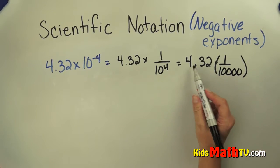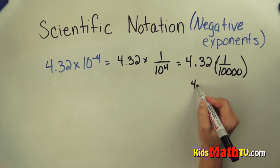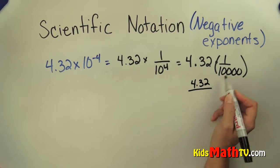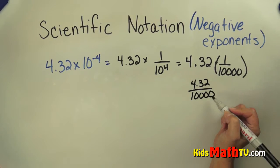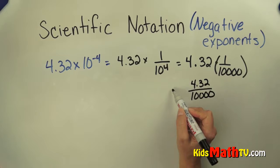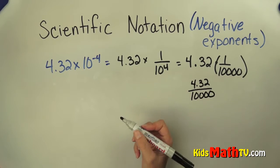So really what we're doing here, we now have 4.32 divided by 10,000. So when I divide by 10,000, I'm actually moving the decimal to the left.